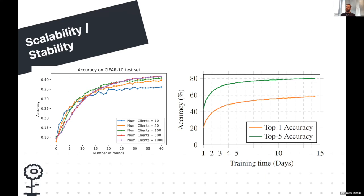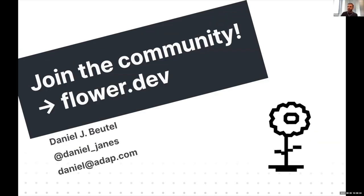The last result is on scalability and stability. On the right-hand side you can see a plot of ImageNet training on a shared machine that ran for more than two weeks — close to 15 days — in a very early phase of Flower, and we were quite happy it worked out so well. On the left-hand side is a scalability experiment running the same workload across a varying number of clients — from 10 to 50 to 100 to 500 to 1,000 — measuring the impact on model convergence. In this case it was a simple CNN trained on the CIFAR-10 dataset.